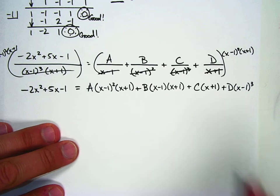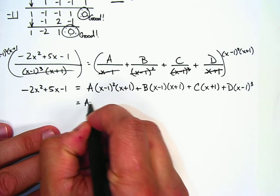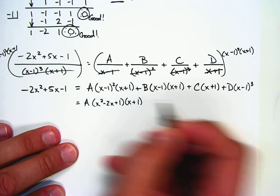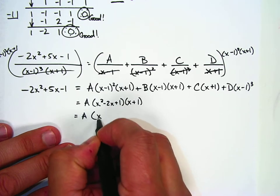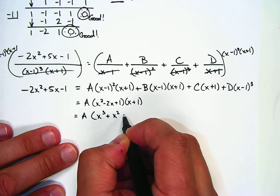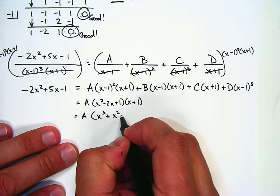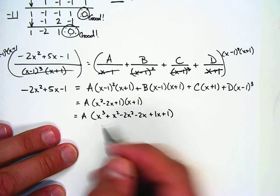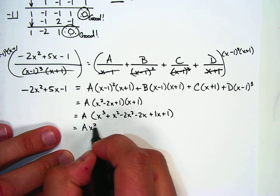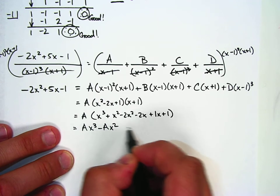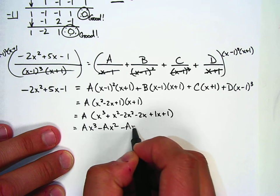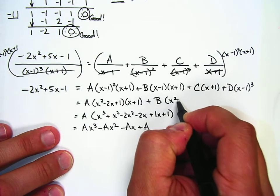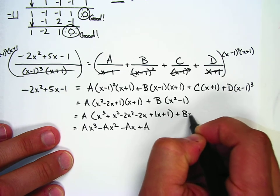Now a lot of multiplying needs to happen. For the A term: x minus 1 squared is x squared minus 2x plus 1, times x plus 1, which expands to ax cubed minus ax squared minus ax plus a. For the B term: x minus 1 times x plus 1 is x squared minus 1, giving bx squared minus b.